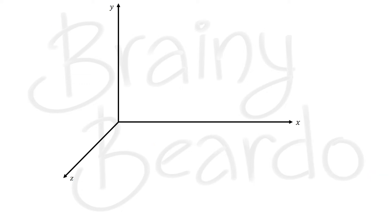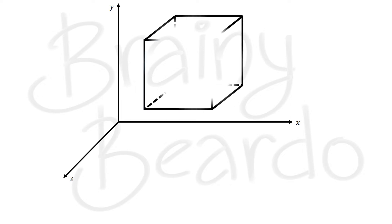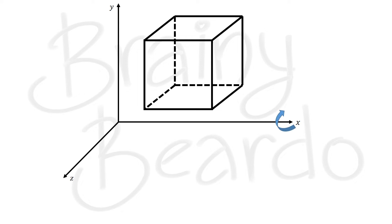To understand rotation further, let us take a fluid element in three dimensions. When we say rotation, it does not happen only with respect to one axis — the fluid element rotates with respect to all three axes: it can rotate with respect to the x-axis, the y-axis, and also the z-axis. To understand further, let us view the fluid element from the front so that we can view the xy-plane.